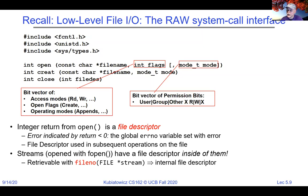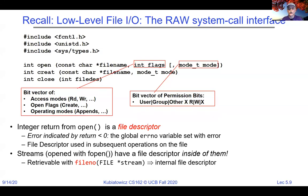On the question of whether random descriptor numbers could be a vulnerability: all access control is done on open, and the kernel puts a mapping between the file descriptor number and the open file into your process's table. The best you'd get by randomly selecting a descriptor is maybe picking one that's already open — but you already have permission since it's your process. The mapping between numbers and open file descriptions is unique to the process, so random descriptor numbers don't help you.